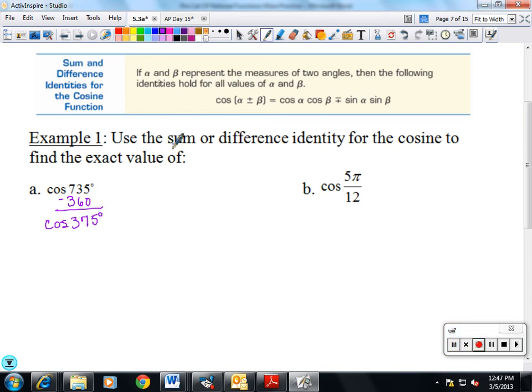What we do is sum and difference mean add and subtract, so we're going to find two angles on our circle that add to give us 375. 360 and 15 won't work, but how about 315 and 60? Well, 315 and 60 add together to give me 375.